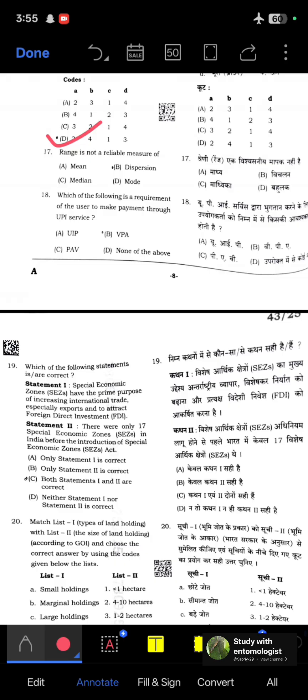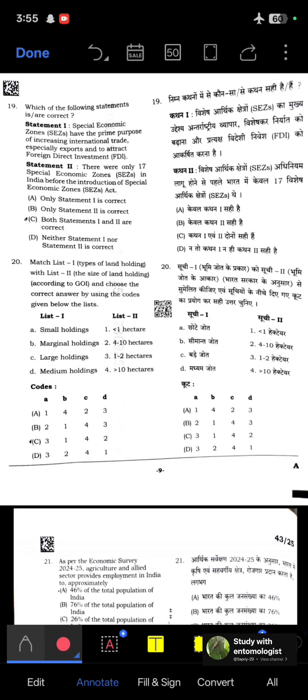Range is not a reliable measure of dispersion. Which of the following is a requirement for users to make payment through UPI service? Virtual Payment Address, VPA. Which statements are correct? Statement 1: Special Economic Zones have the primary purpose of increasing international trade, especially exports, and attracting FDI. Statement 2: There were only 17 SEZs in India before the SEZ Act. Both are correct.